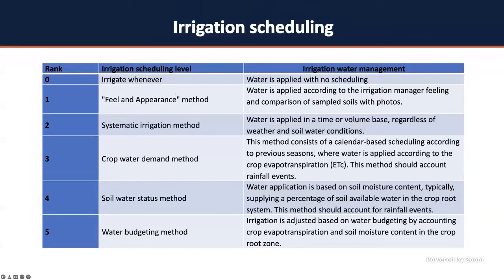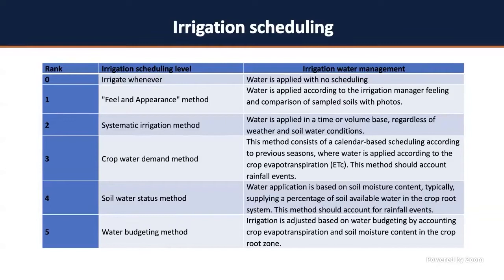Rank zero is irrigating whenever — you walk through your field, see a need for water, and apply it with no scheduled events. Rank one is the field and appearance method, a USDA method that compares soil colors with a chart the USDA provides. You can find those charts by searching 'field and appearance method of irrigation scheduling USDA.' However, I don't recommend that method because it's still based on feeling, essentially the same as irrigating whenever.